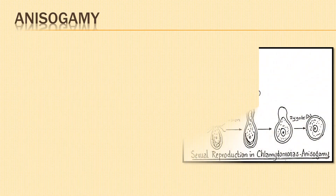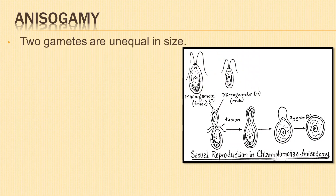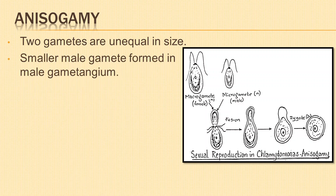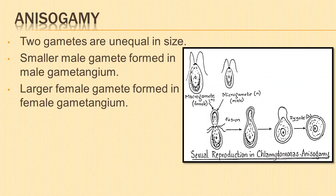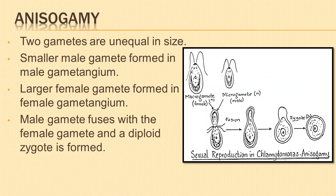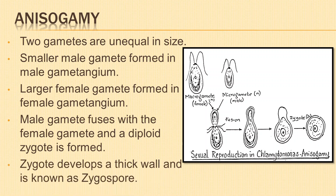In anisogamy, the two gametes are unequal in size. The male gamete, known as the microgamete, is small and formed in the male gametangium; sixteen active gametes are formed by division of the protoplast. Female gametes or macrogametes are large and formed in the female gametangium, where the protoplast divides to form only 2 to 4 gametes. The active male gametes come close to the female gamete, and the protoplast enters from the male into the female gamete. Fusion takes place, a diploid zygote is formed, and it develops a thick wall to become a zygospore.